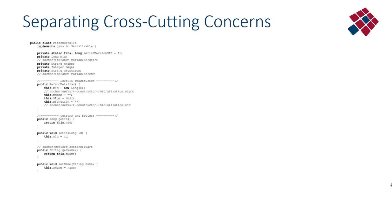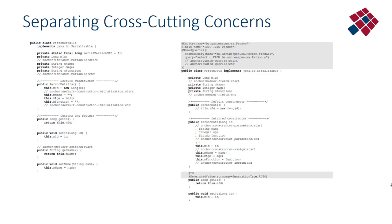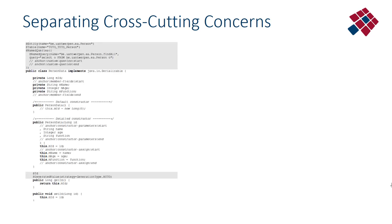In general, how does that look? Here on the left-hand side you have a person details class containing the data attributes of a person — like name, age, and function. On the right-hand side you have a couple of lines of annotations tapping into the persistency framework of the Java Persistency API. These annotations cannot be part of the main class representing the data of a person — they should be separated and encapsulated in a separate class, isolating possible future changes in this framework.